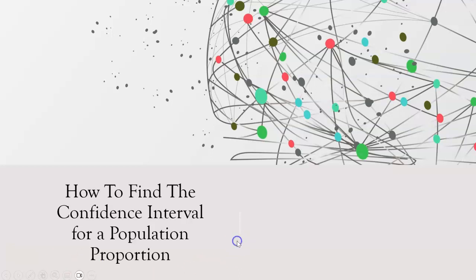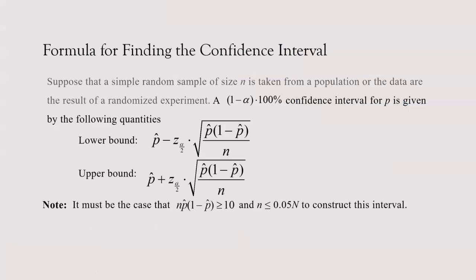Still talking about confidence intervals, and here is the formula for finding the confidence interval for a population proportion. Suppose that a simple random sample of size n is taken from a population, or the data are the result of a randomized experiment. A (1 minus alpha) times 100% confidence interval for p is given by the following: the lower bound is your sample proportion minus your critical value times the standard deviation of your sample proportion, and the upper bound is your sample proportion plus your critical value times the standard deviation — which is the square root of p-hat times (1 minus p-hat) divided by n.